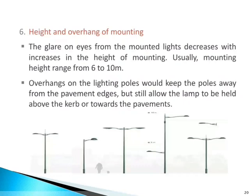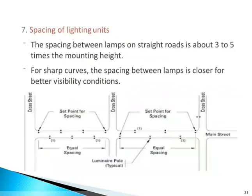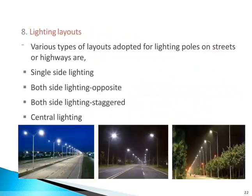Regarding height and overhang of mounting: glare from the mounted light decreases with an increase in the height of mounting. Usually, mounting height ranges from 6 to 10 meters. Overhangs on the lighting poles keep the poles away from the pavement edges but still allow the lamp to be held above the curb or towards the pavement. Regarding spacing of lighting units: the spacing between lamps on a straight road is about 3 to 5 times the mounting height. For curves, the spacing between lamps is closer for better visibility conditions.